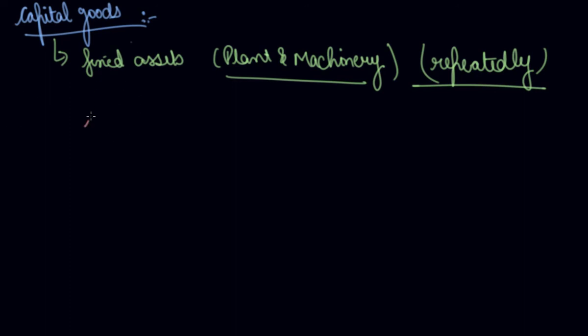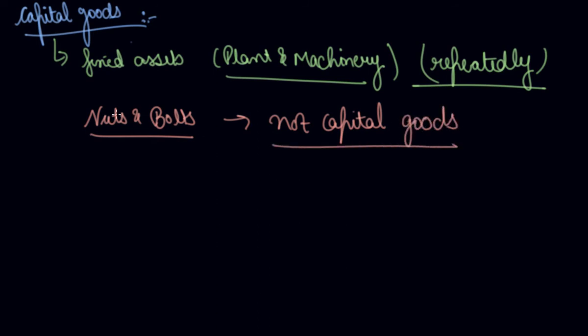But nuts and bolts, these are not capital goods. Although these are purchased by the producer for the production process, but these are not the capital goods. Because if once you have fixed the nut in a particular production process, let's say you are a manufacturer of scooty, if you have fixed particular nut or bolts in the scooty, you cannot again and again repeatedly use the same nuts and bolts. You need different. So these are not your capital goods. Your capital goods are the fixed assets that can be repeatedly used in the process of production, like your plant and machinery, your lamp.